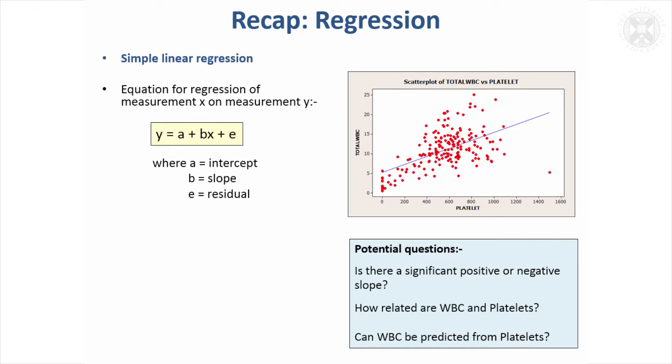That regression model can serve several purposes. It can tell us is there a significant positive or negative relationship between two continuous measurements. The b, the slope value, gives us a feel for how related the measurements are. Sometimes it's useful to be able to predict one thing from another, and the regression gives us the scope to do that.